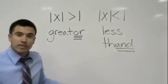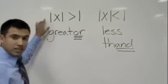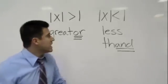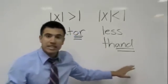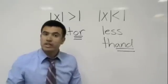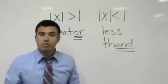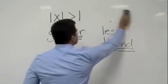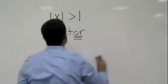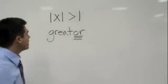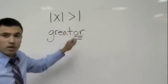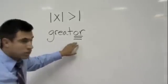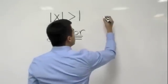Why is that important? In the 'greater' case, the answer is going to be in an 'or' form. In the 'less than' case, the answer is going to be in an 'and' form when we graph it on the number line. That will definitely help us. Let me show you. So we have the absolute value of x is greater than 1, and we say 'greater' like 'or,' so we know it's 'or.'